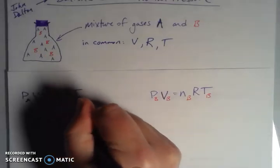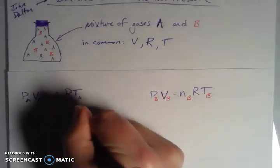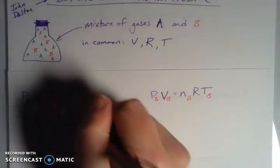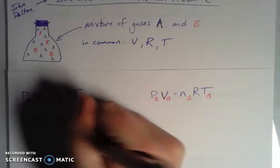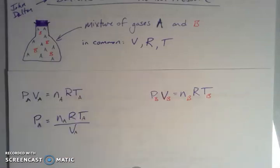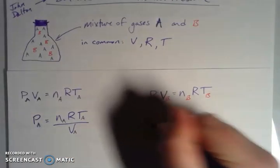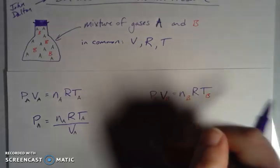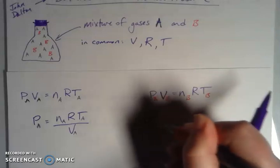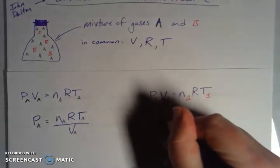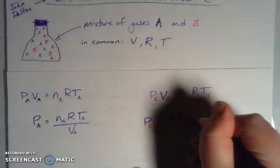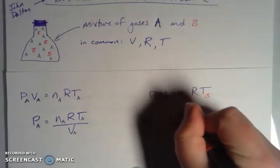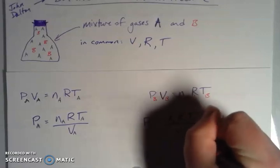Okay, so we have NRT over V. And this is for A, so the number of moles of A, the temperature for A, the volume for A. And then we can do the same for B if we rearrange and solve for the partial pressure due to B. Then that's going to be equal to NRT over V. Again, with the number of moles of B, the temperature of B, and the volume of B.